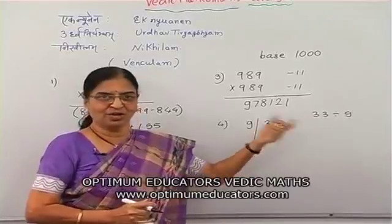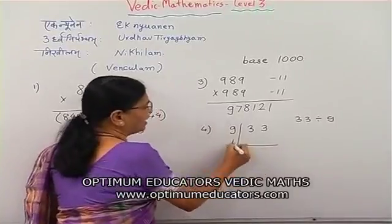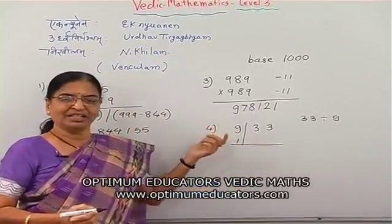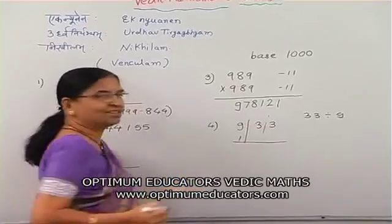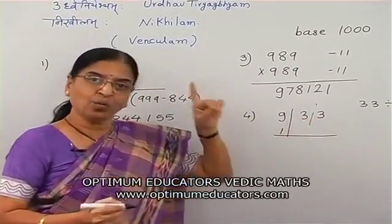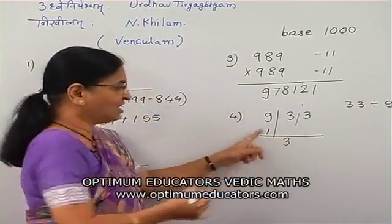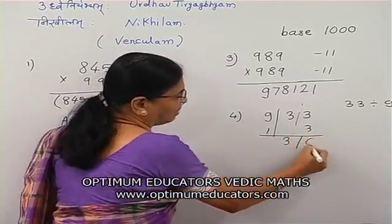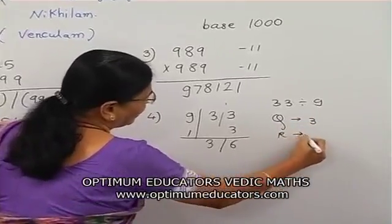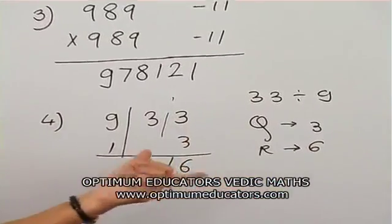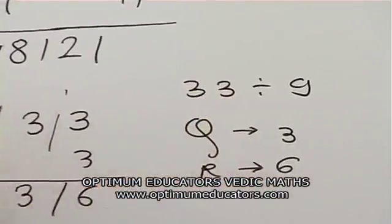For 33 ÷ 9, we can do this orally too, but to revise the Nikhilam method: take 1 from the base difference, since there is a difference of 1. As there is a single digit divisor, mark a straight line after 1 digit. The first digit stays as 3, then 3 × 1 = 3 as the remainder addition. So the quotient is 3 and the remainder is 6. Check: 9 × 3 = 27, and 27 + 6 = 33. Correct.